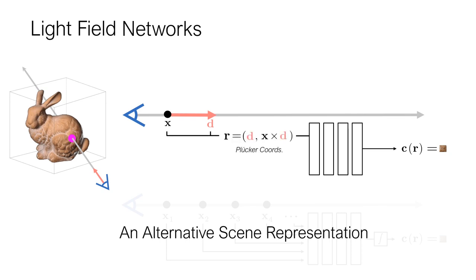For light field networks, rendering a ray requires a single evaluation of the network, rather than hundreds as per 3D-structured neural scene representations. By meta-learning a space of light field networks via a conditioning variable z, we show that LFNs can generalize across scenes and learn to output multi-view consistent light fields. Light field networks also encode geometry information about the underlying 3D scene via their derivatives, which can be efficiently accessed via automatic differentiation.